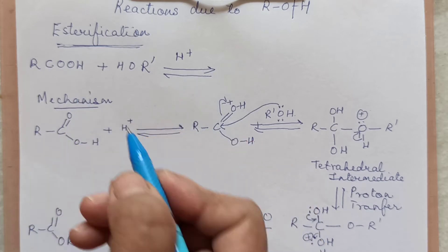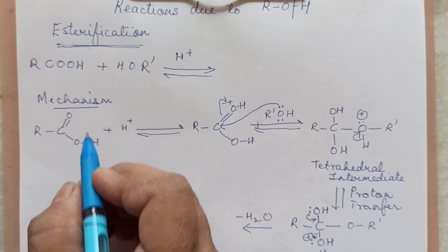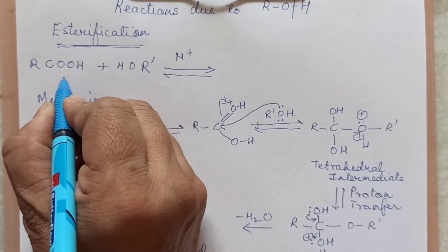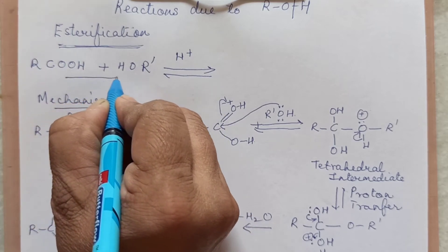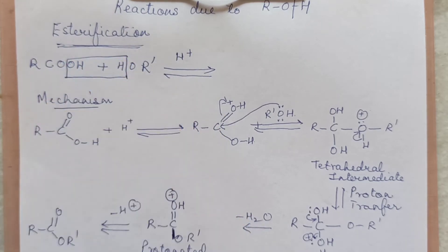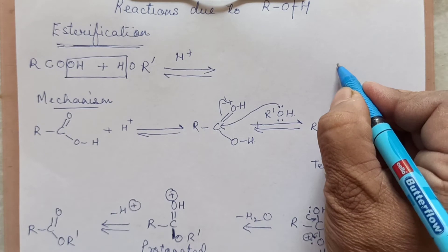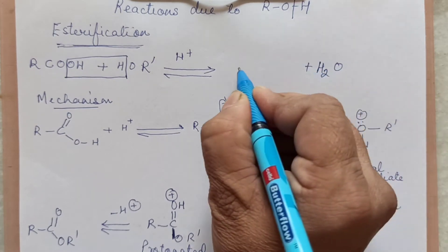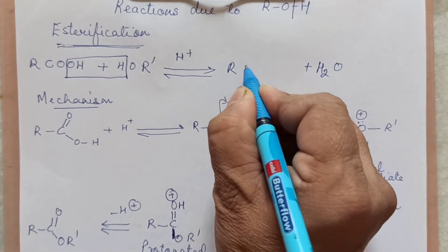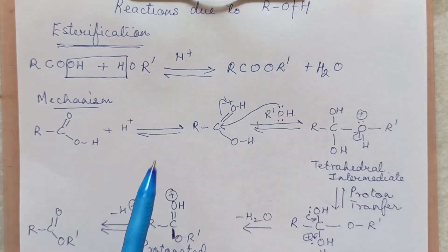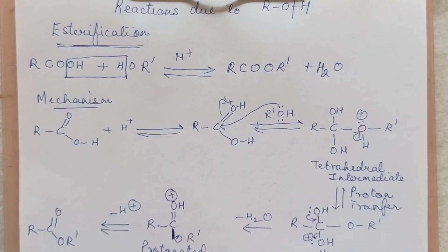In this reaction, carboxylic acid and alcohol in acid medium — this bond will break, and water will come out. So you will write: water plus R-C-O-O-R'. I have taken R and R' just to distinguish between the two groups.